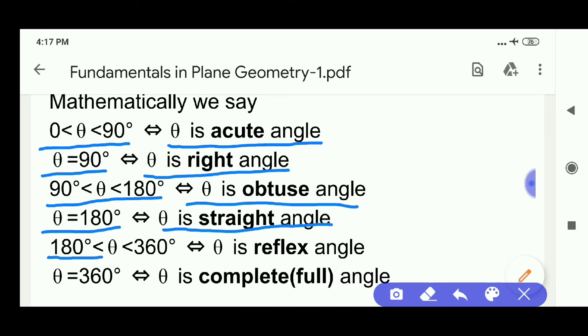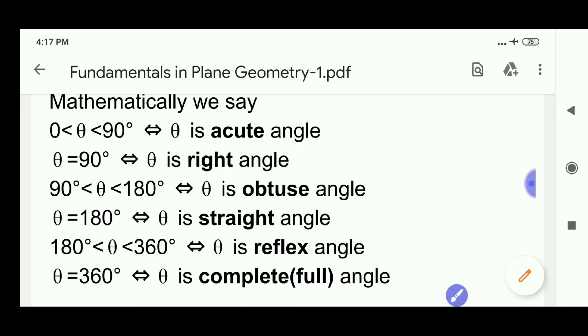180 less than theta less than 360, bi-implies theta is reflex angle. Theta is 360 degrees, then it is called complete angle or full angle.